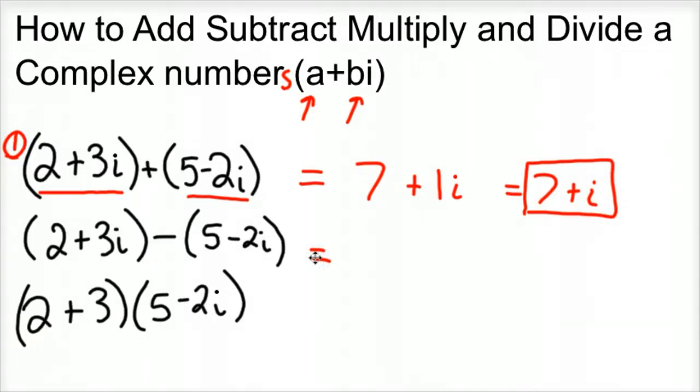Subtraction, give it a shot now. So stop the video, try it, see what you get. See if what you get matches what I get. So with subtraction, we've got a negative in front of this negative, is in front of the 5 minus 2i. So that is like having a negative 1 there.